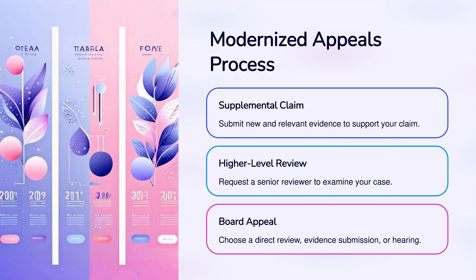Modernized Appeals Process. Supplemental Claim: submit new and relevant evidence to support your claim. Higher-Level Review: request a Senior Reviewer to examine your case. Board Appeal: choose between a Direct Review, Evidence Submission, or Hearing.